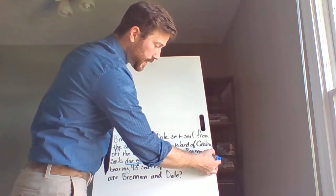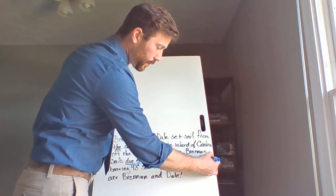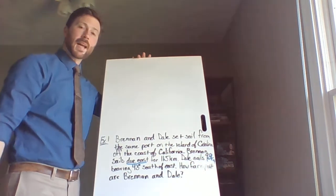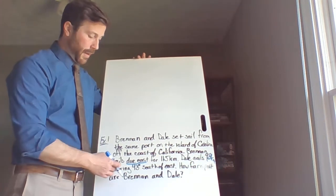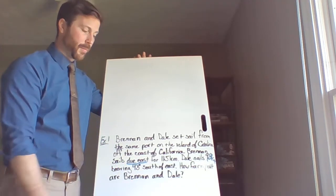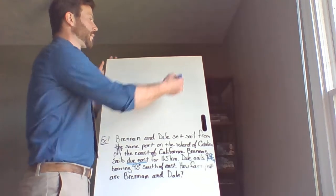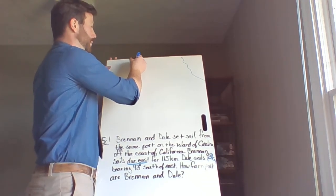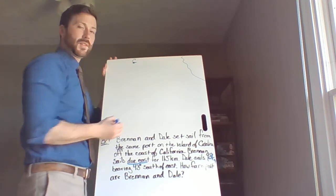Dale sails, this actually says 98, it got a little rushed out there. 98 kilometers bearing 43 degrees south of east. How far apart are Brennan and Dale? So here's California. Here's the island of Catalina.